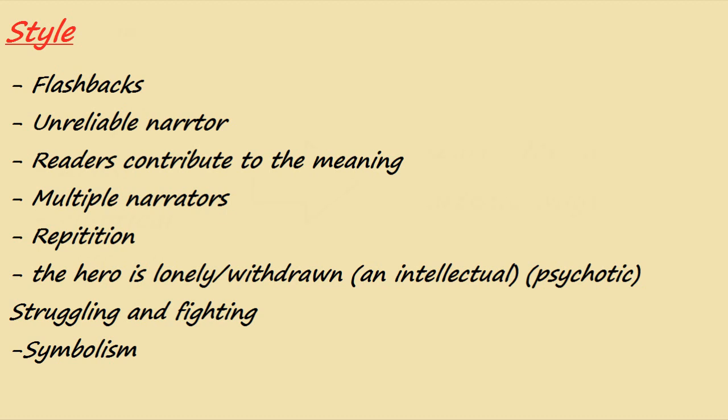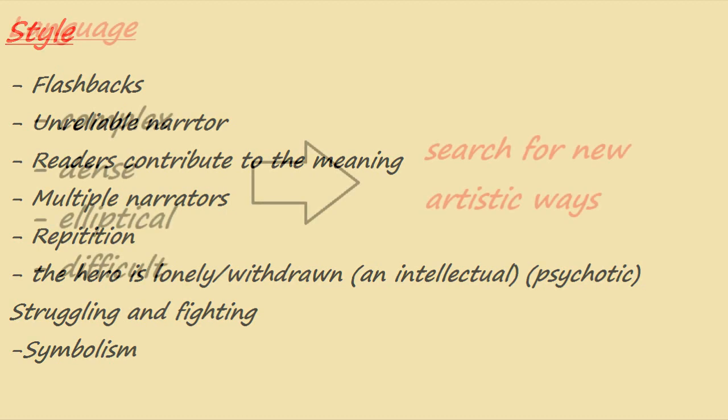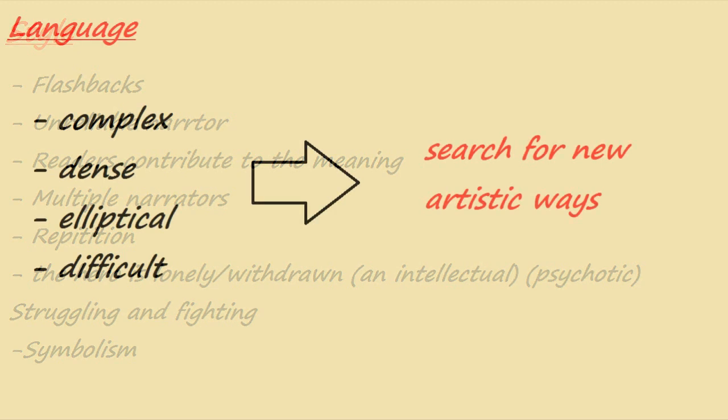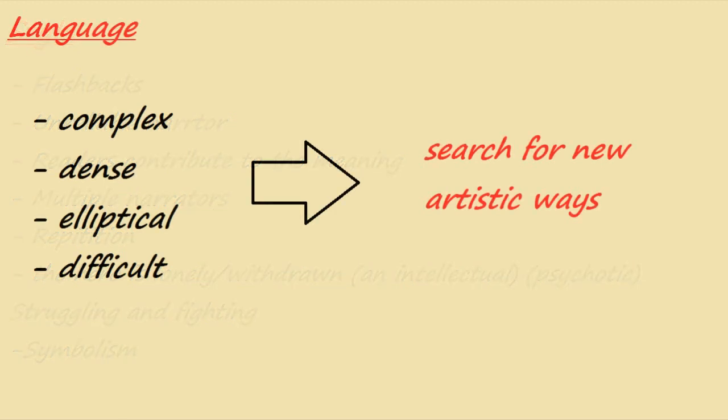At the end, we talk about the language. The language is complex, dense, and also elliptical and very difficult. Writers use this kind of language in order to search for new artistic ways.